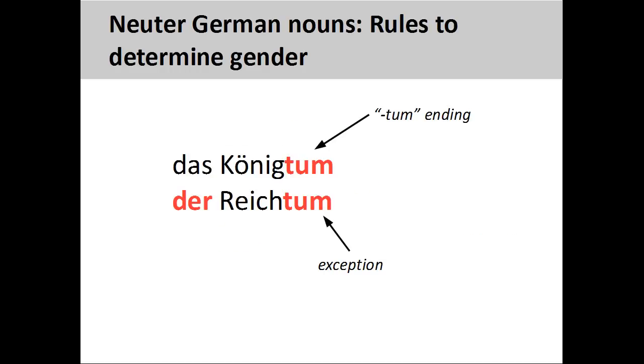Nouns ending in -tum will generally be neuter, such as Königtum meaning kingship, although there are some exceptions to this rule, such as Reichtum meaning riches.